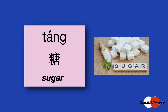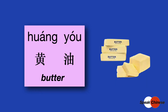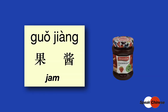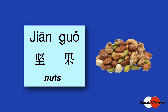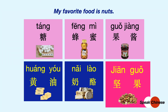糖, sugar. 蜂蜜, honey. 黄油, butter. 奶酪, cheese. 果酱, jam. 坚果, nut. Which of the following foods is your favorite? 糖,蜂蜜,果酱。 还是黄油,奶酪,坚果。 嗯,我最喜欢坚果。 你呢? 你最喜欢什么?